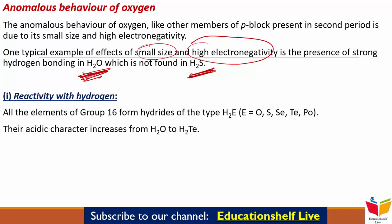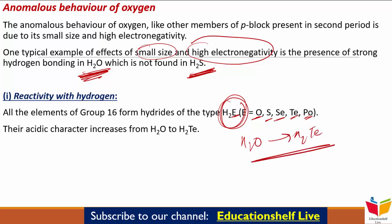अब जितने भी elements हैं Group 16 के, वो hydrides बनाते हैं H₂E type की, जहाँ E = O, S, Se, Te, Po। जैसे-जैसे हम H₂O से H₂Te तक जाएंगे, acidic character बढ़ता जाएगा। इसे explain किया जा सकता है in terms of decrease in bond enthalpy for the dissociation of H-E bond down the group। जैसे-जैसे H-E bond enthalpy कम होती है, acidic character बढ़ता जाएगा।